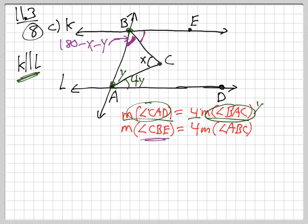Okay, and now this angle here, they're telling me CBE, CBE, is four times as big as ABC. It's four times as big as ABC, four times that. So it's four times 180 minus X minus Y, right? It's got to be four times.